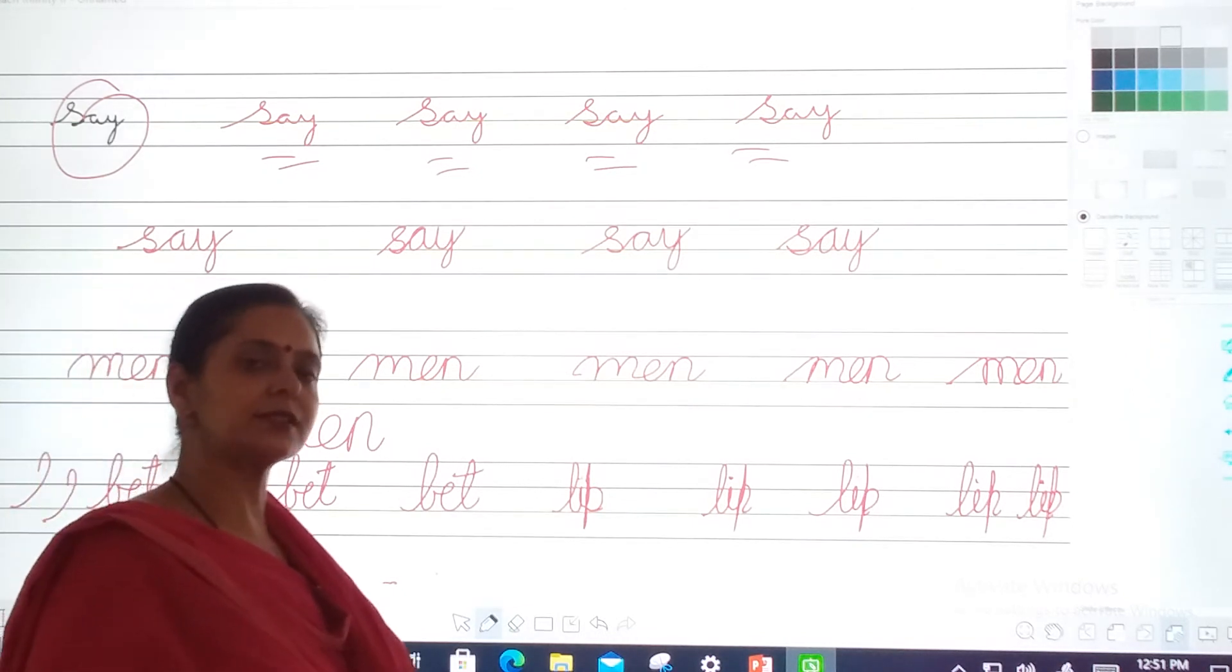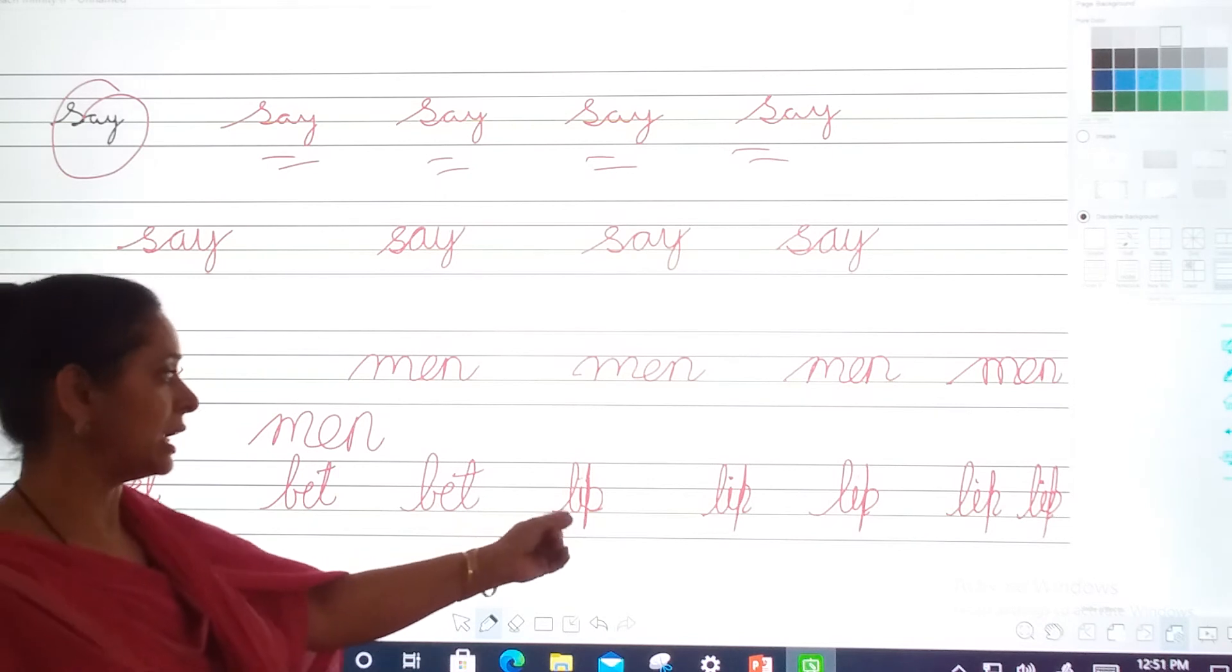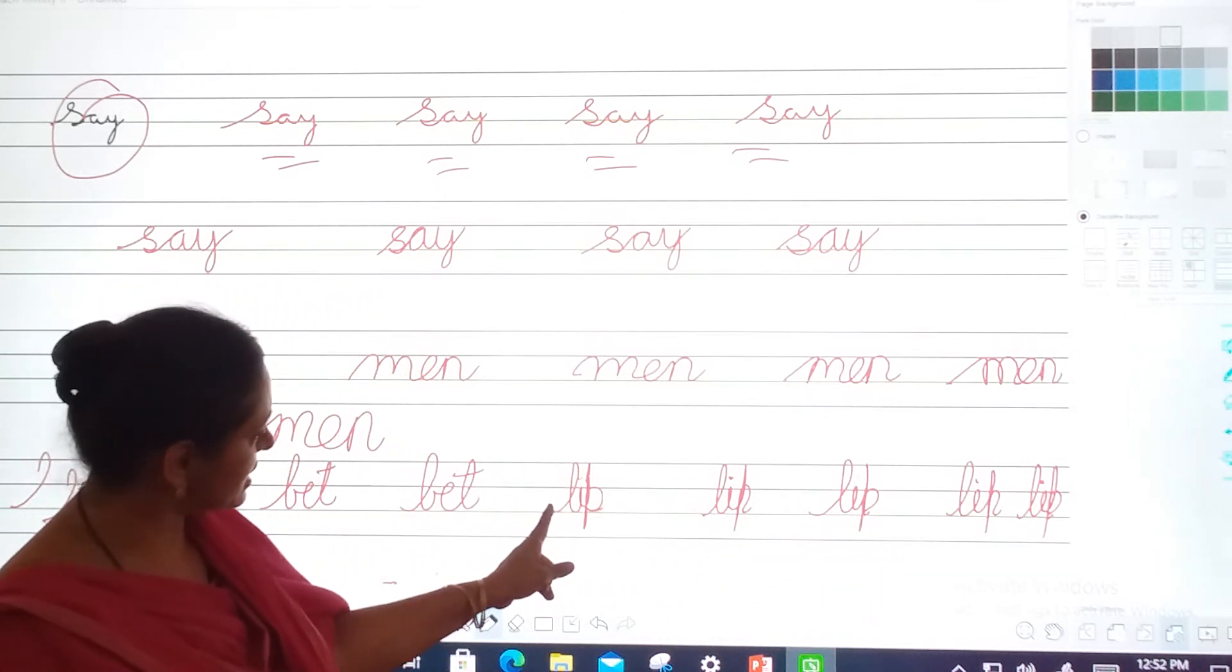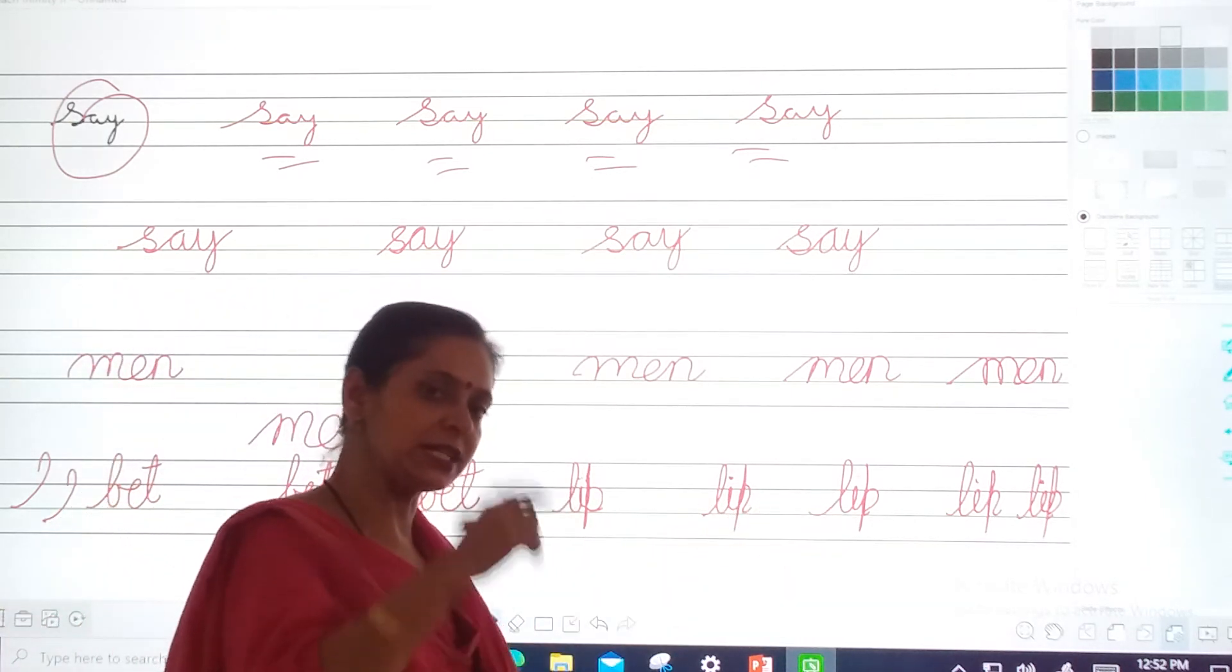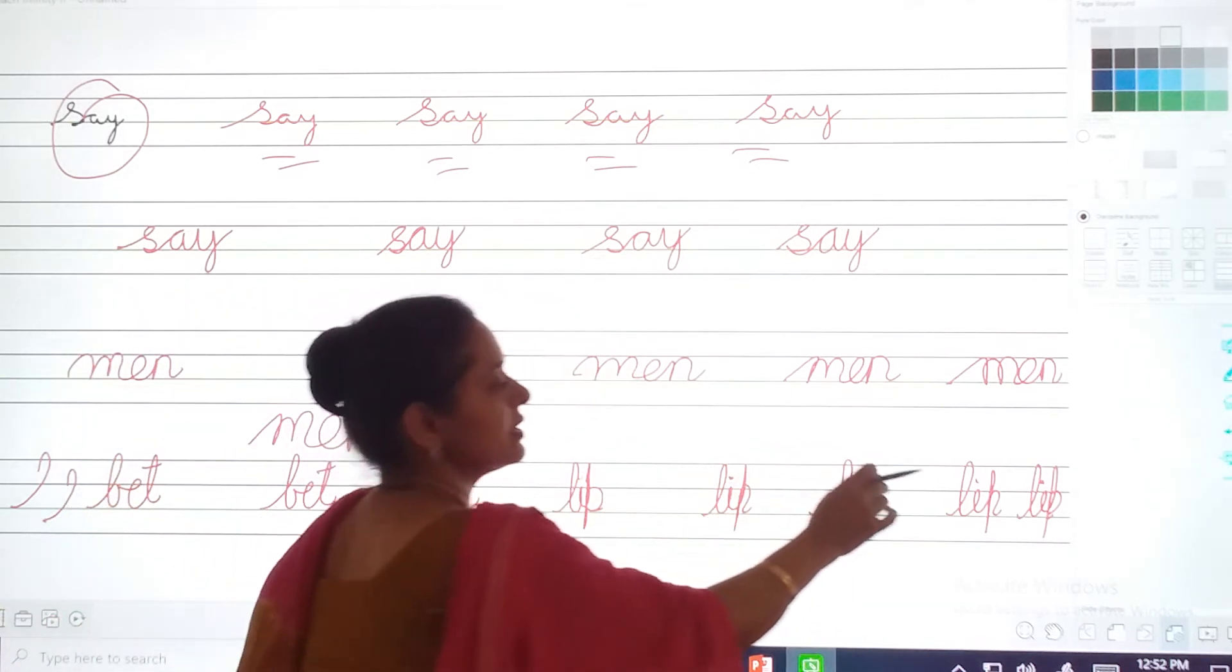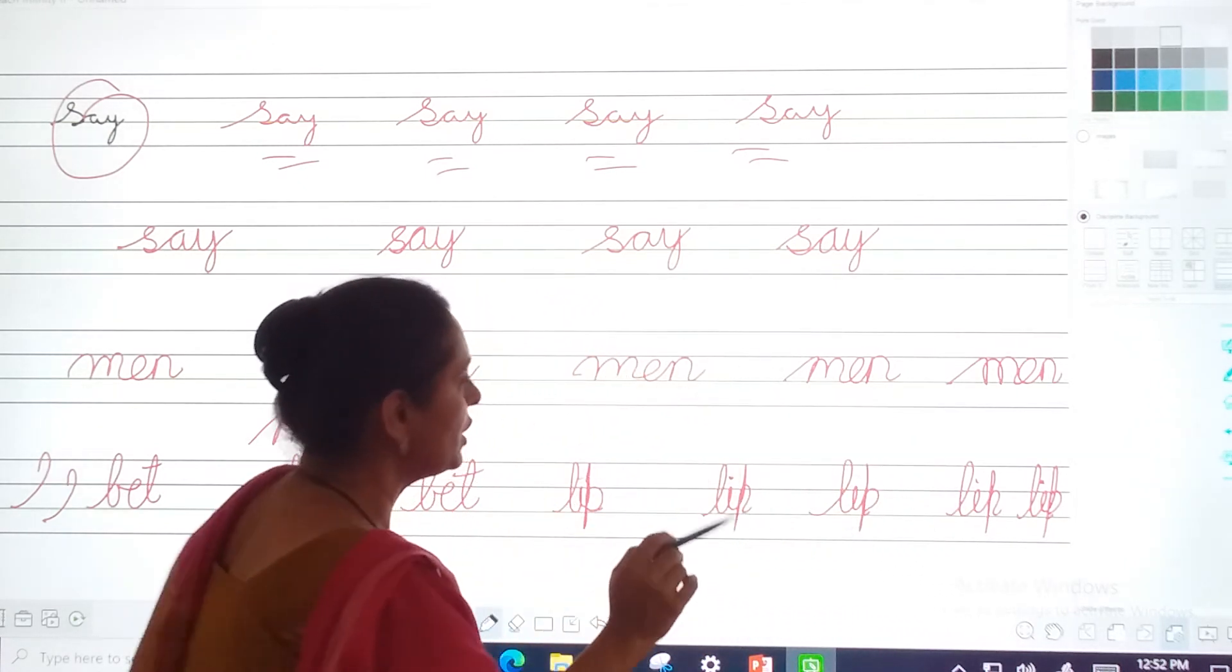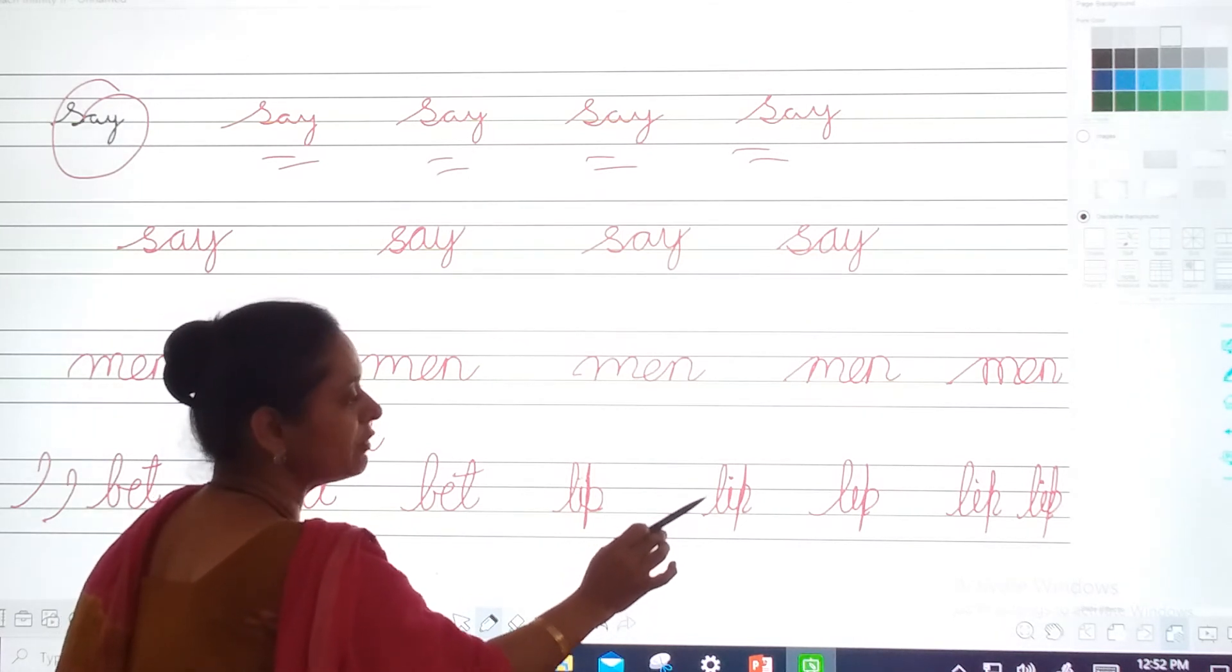So my dear students. These are the letters which we have learned today. And among this lip, lip and lip. Which is the correct formation? This one is the correct formation. Okay? Aapko I ko aise curve nahi karna hai. Isme bhi dekho maim ne curve kiya hai. That you don't have to do. You have to write in this way. This is the correct formation of lip.